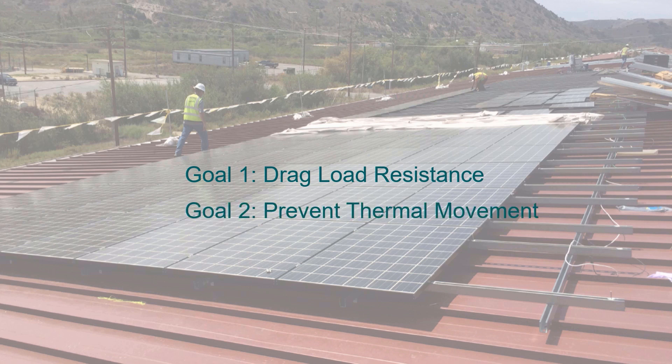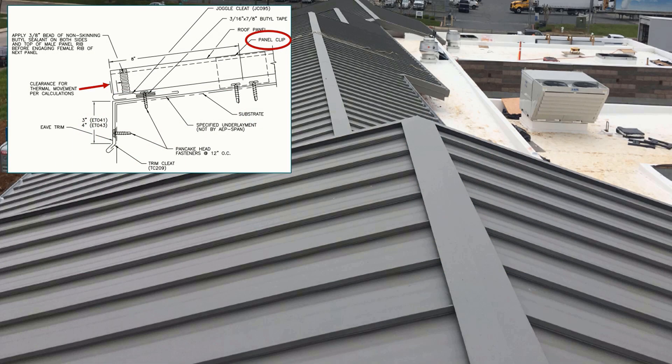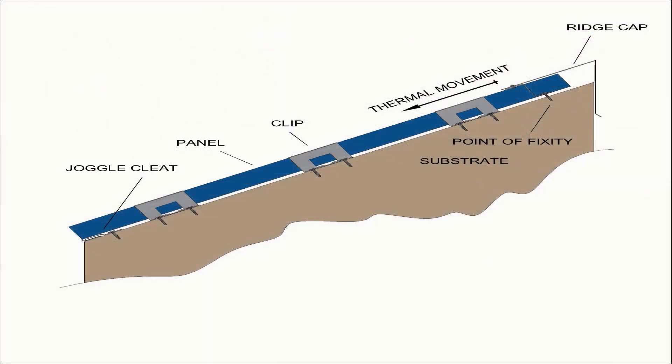The second reason for establishing a point of fixity is to prevent thermal movement at that location and force it in the direction you want it to go. The first and most common way is fixing the panels at the high side of the roof, preventing thermal movement at the ridge and forcing it down slope to the eave line. Manufacturer's details are designed around this requirement.